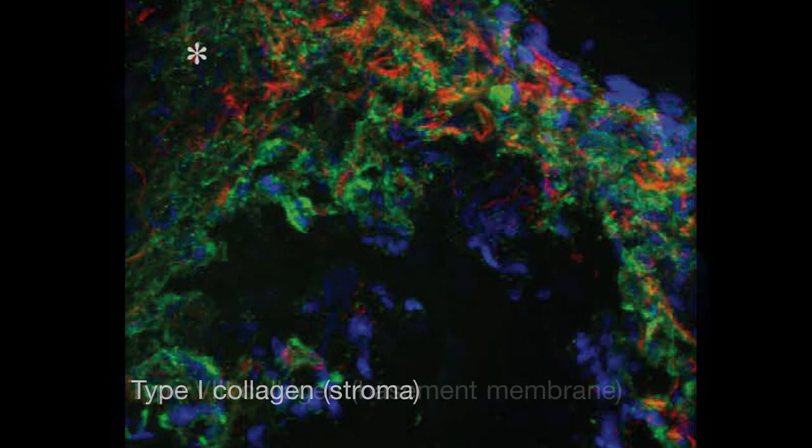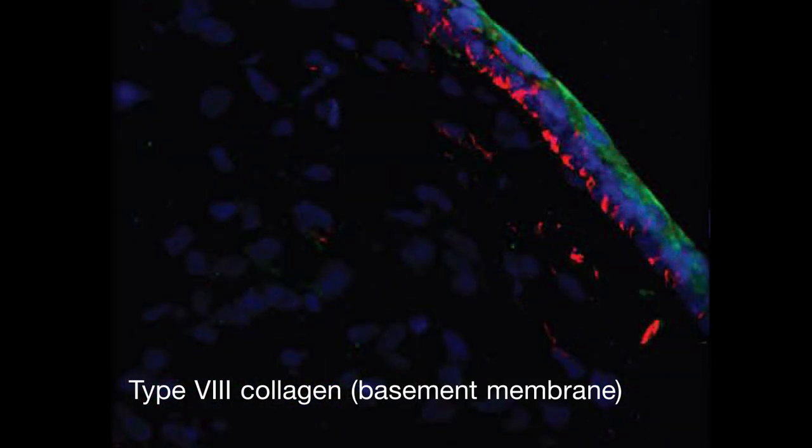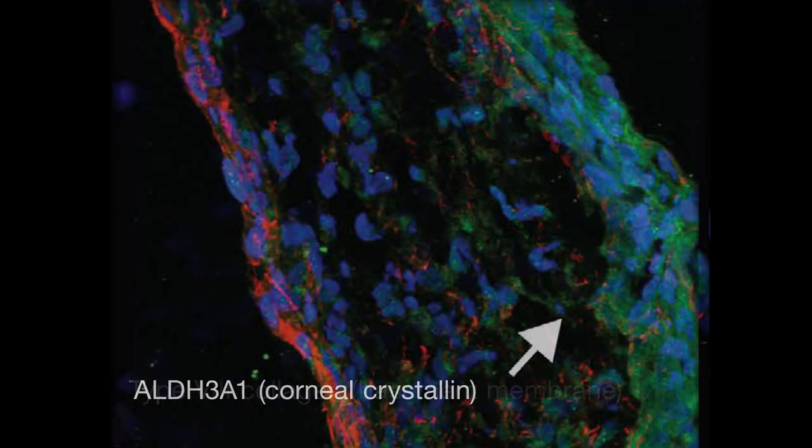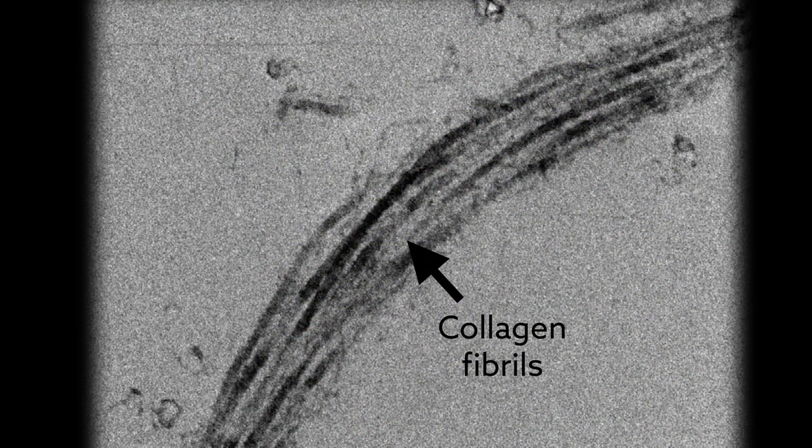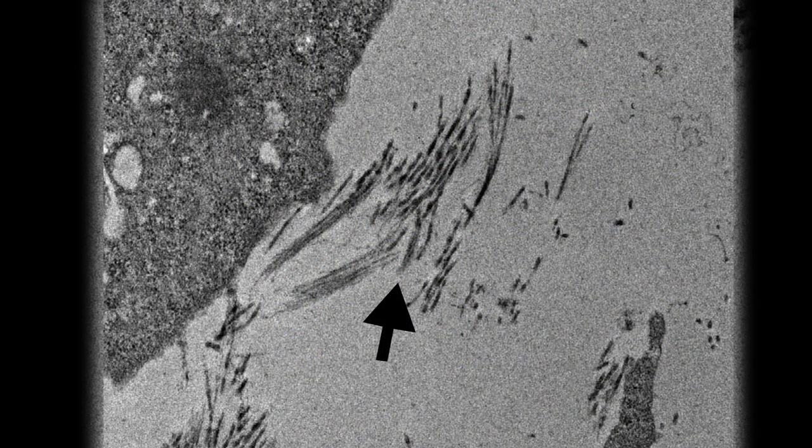When the team stained the organoids to see which proteins were there, they found that the cells were arranged in a configuration that matches the human cornea. The organoids had even accumulated collagen fibrils in a pattern similar to the true organ.